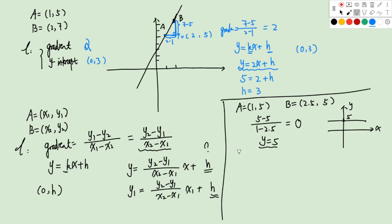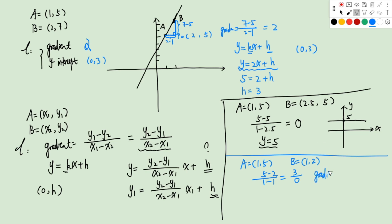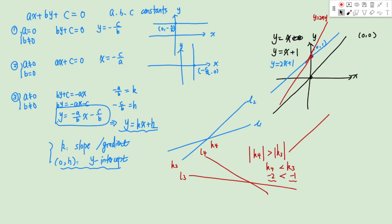Let's look at another example. If A = (1, 5) and B = (1, 2), the slope calculation gives (5 minus 2) over (1 minus 1) = 3 over 0. Since we cannot divide by zero, the gradient does not exist. If you draw this on the Cartesian plane, it will be the line X equals to 1, perpendicular to the X axis. So when a straight line is perpendicular to the X axis, it has no gradient.